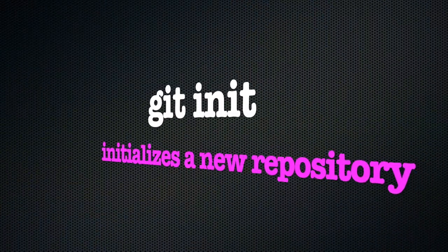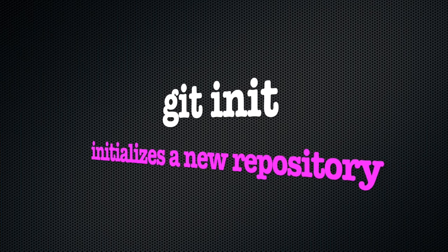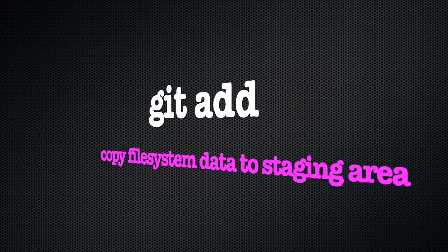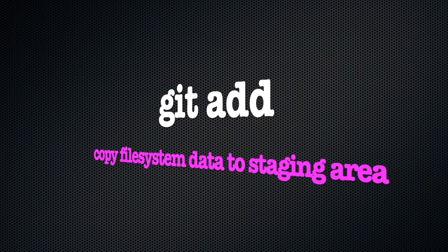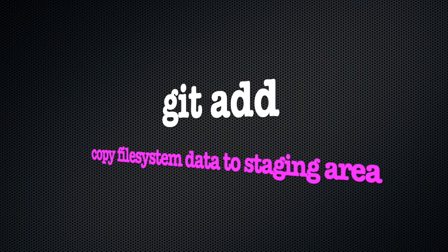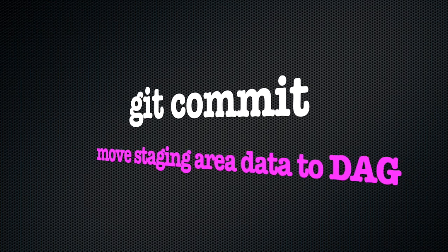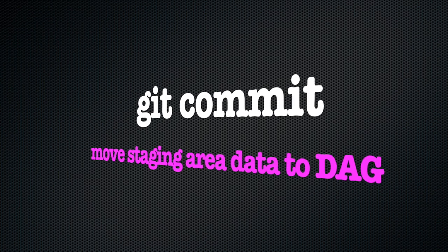We know that git init is how we initialize an empty repository. We know that git add is how we copy files from our file system to the staging area, which is where Git prepares them so they are ready to be committed. We know that git commit is how we take everything that's currently in the staging area and add it to the DAG.